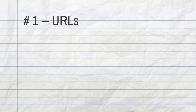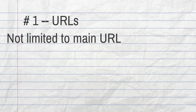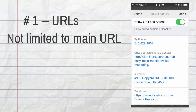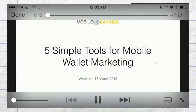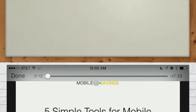Number one on my list: website URLs. Don't feel like you're limited to your main URL. I often point these links to new articles or how-to videos. The embedded videos launch right from the back of the card.